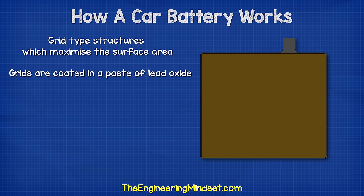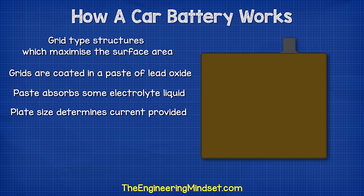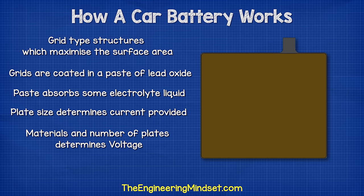The paste is where the chemical reaction occurs. It acts a bit like a sponge and will absorb some of the electrolyte liquid, which improves the battery performance. The size of the plate determines how much current a battery can provide, but it doesn't change the voltage. The materials used for the chemical reaction and the number of plates determines the voltage produced by each cell.